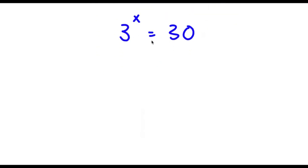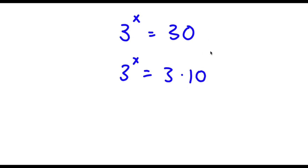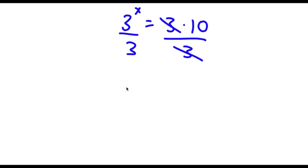Alright, so I have 3 to the power of x is equal to 30. To start, 30 can be rewritten as 3 times 10. So now I have 3 to the power of x is equal to 3 times 10. I'm going to divide both sides by 3. These two cancel out and now I have 3 to the power of x over 3 to the power of 1 — because anything to the power of 1 is itself — is equal to 10.